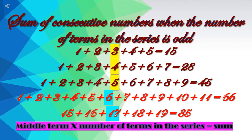Let's start with the sum of consecutive numbers when the number of terms in the series is odd. First of all we will take 5 numbers: 1, 2, 3, 4 and 5. So 1 plus 2 plus 3 plus 4 plus 5, and their sum is 15.